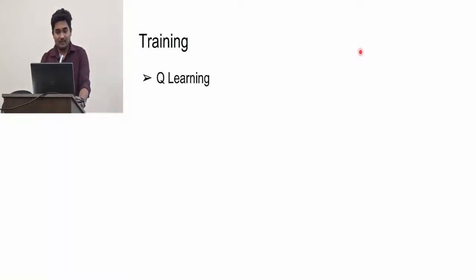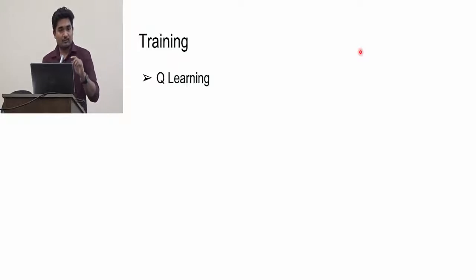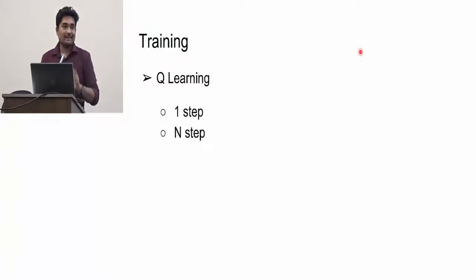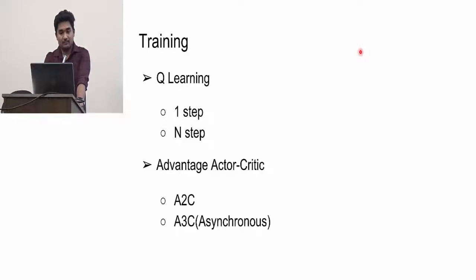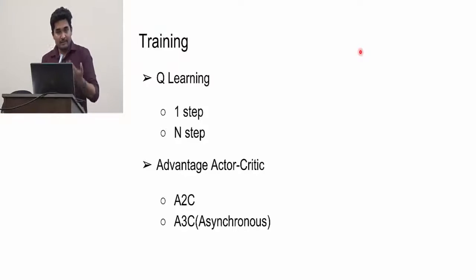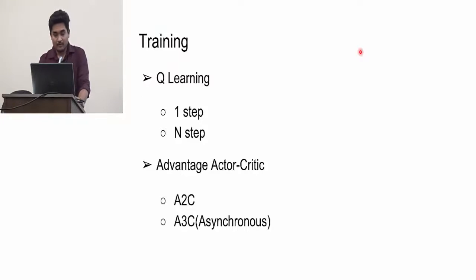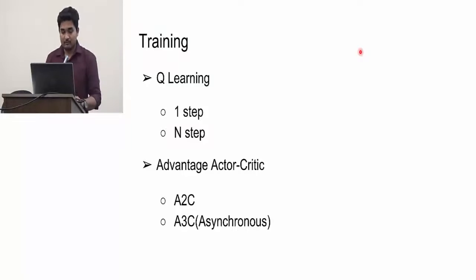Training is the most difficult part of this paper. In deep reinforcement learning, there are many training procedures. One is Q-learning, which can be applied as one-step or N-step Q-learning. Another is the Advantage Actor-Critic algorithm, which can be A2C or A3C — where A3C is the asynchronous version. In this paper, they applied an advanced version of A3C, so I will explain the A3C algorithm for context.